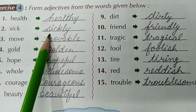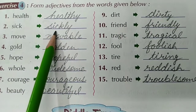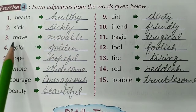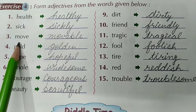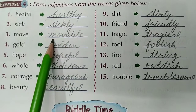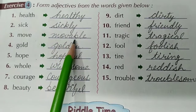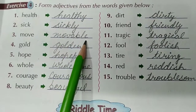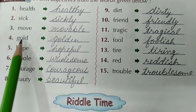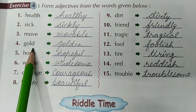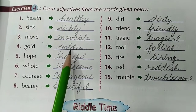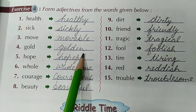Next is Sick. The adjective form is Sickly — S-I-C-K-L-Y. Sickly. Third is Move. The adjective form is Movable — M-O-V-A-B-L-E. Movable. Fourth word is Gold. The adjective form of Gold is Golden — G-O-L-D-E-N. Golden.